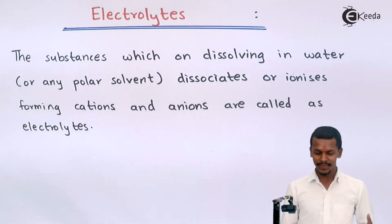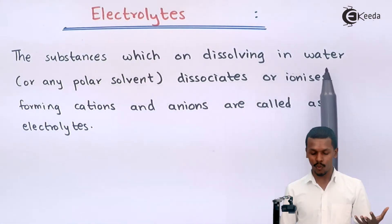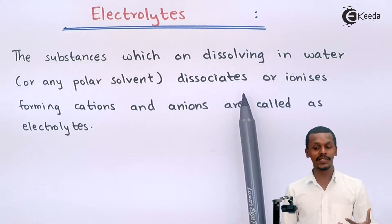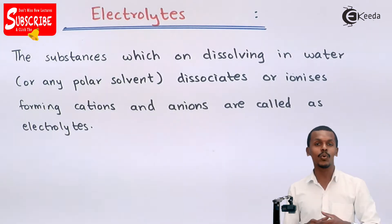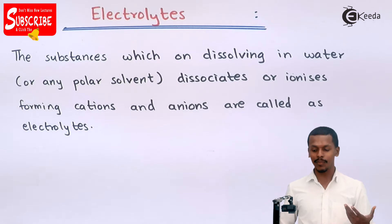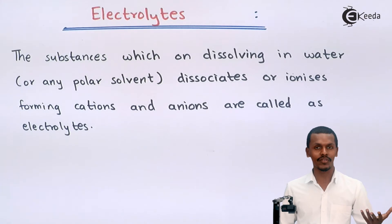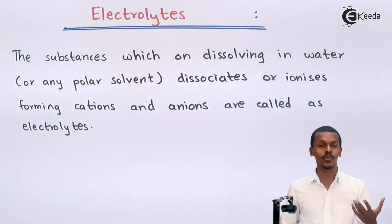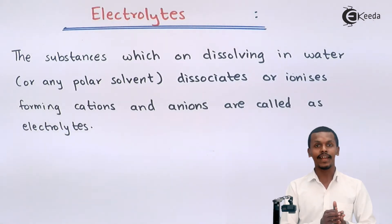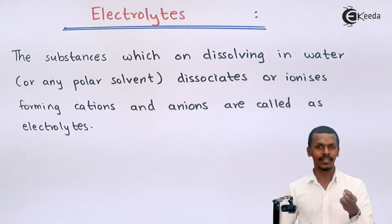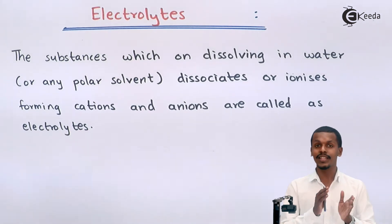So what is actually an electrolyte? An electrolyte is basically a substance which, on dissolving in water or any polar solvent, dissociates or ionizes to form cations and anions. Cations are those species which are positively charged, and anions are those species which have a negative charge. So some substances when dissolved in water ionize in the form of cations or anions, or they dissociate.